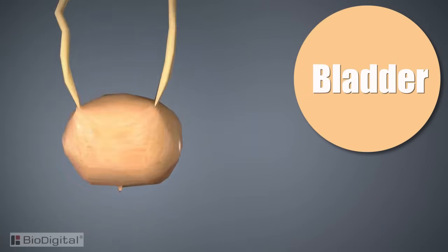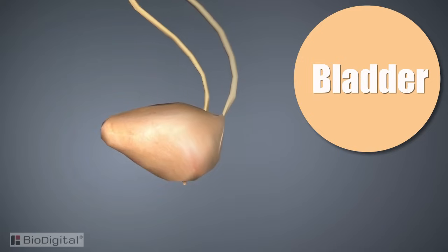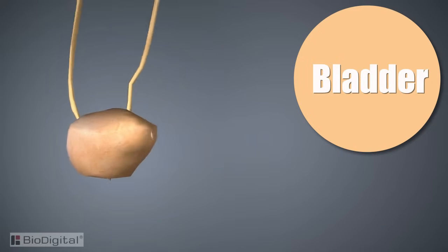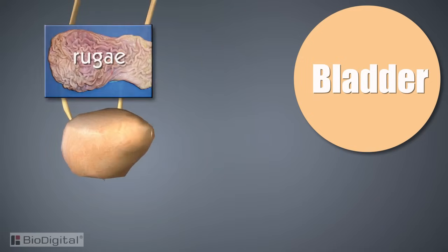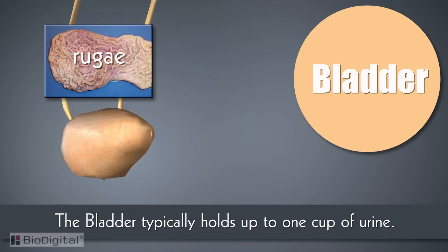The bladder is a hollow sack, much like the stomach, lined by a series of folds called rugae. The purpose of these folds is to allow the bladder to expand as urine is collected. The bladder typically holds up to one cup of urine — and sometimes more — until the urge to void or urinate is triggered.